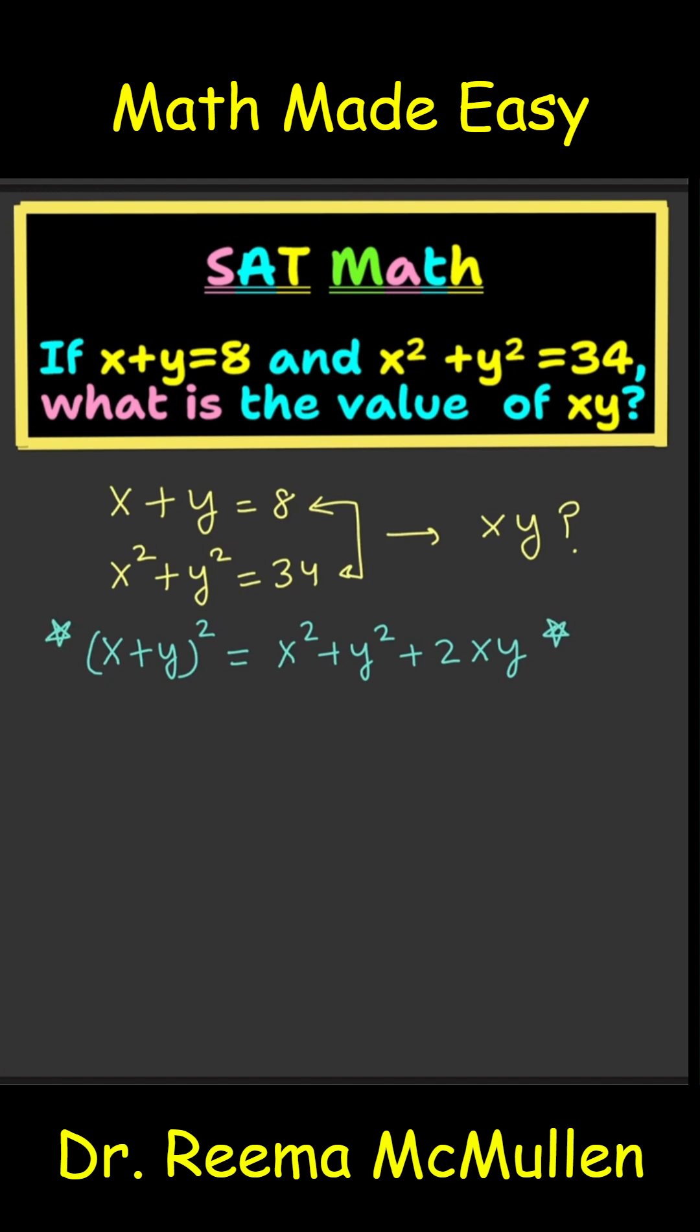So now we know that x plus y here is equal to 8. So go ahead and substitute 8 for this x plus y. And what are we doing to this? We're going to square it. Equal to what? x squared plus y squared. And we are given that x squared plus y squared equals 34. So go ahead and put in 34 for x squared plus y squared. And this 2xy, that remains itself.